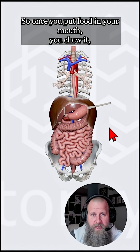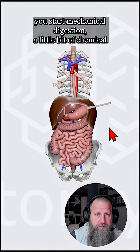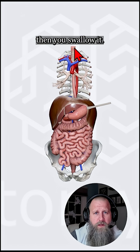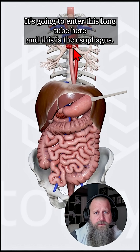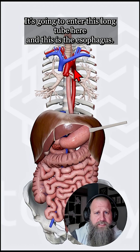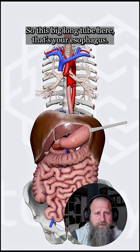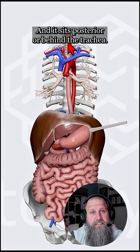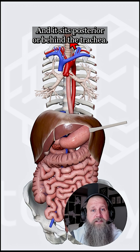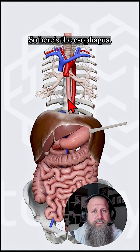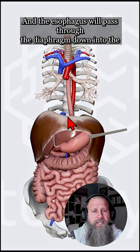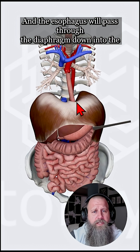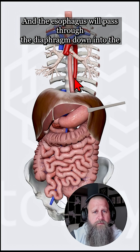So once you put food in your mouth, you chew it, you start mechanical digestion, a little bit of chemical digestion, then you swallow it. It's going to enter this long tube here, and this is the esophagus. This big long tube here is your esophagus, and it sits posterior, or behind, the trachea.